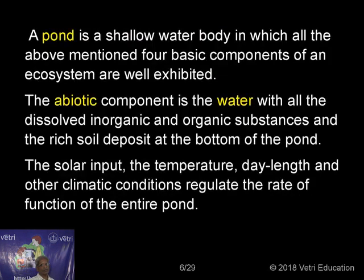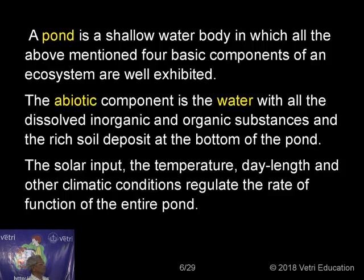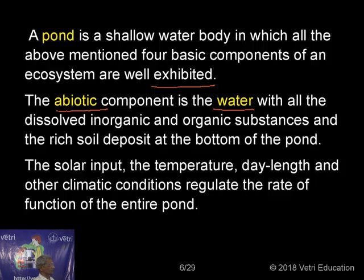I am going to take a pond ecosystem as a typical example. A pond is a shallow water body in which all four basic components of the ecosystem are well exhibited. The abiotic component is the water with all dissolved inorganic and organic substances and the rich soil deposit at the bottom of the pond. The solar input, temperature, day length, and other climatic conditions regulate the rate of function of the entire pond.